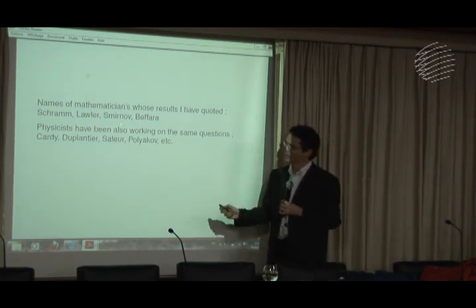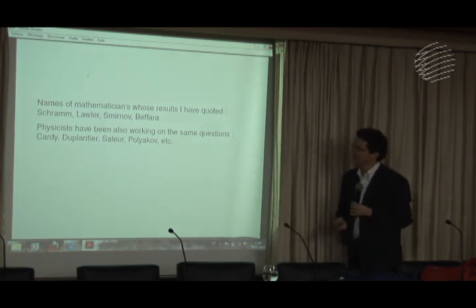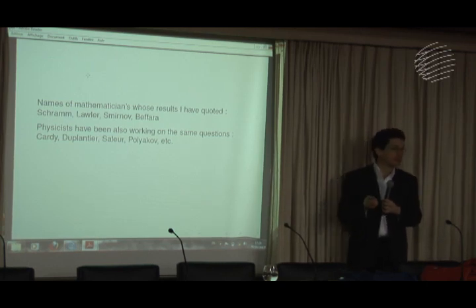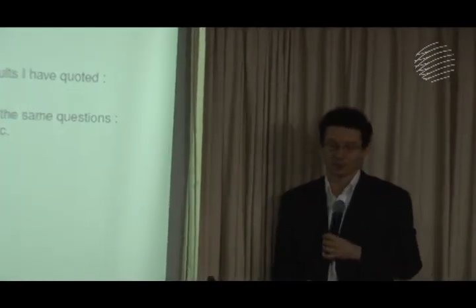And Greg Lawler, Stas Smirnov — who comes more from the complex analysis side — got the Fields Medal in 2010 for the conformal invariance of percolation and the Ising model. He was the one who worked out the dimensions of these random curves. There's a long list of names, but I just mentioned those corresponding exactly to the results I've been discussing, and I've been lucky to interact with all these great people.